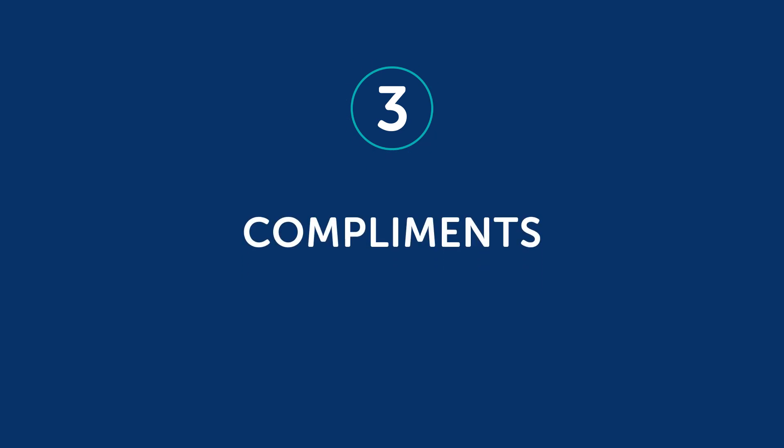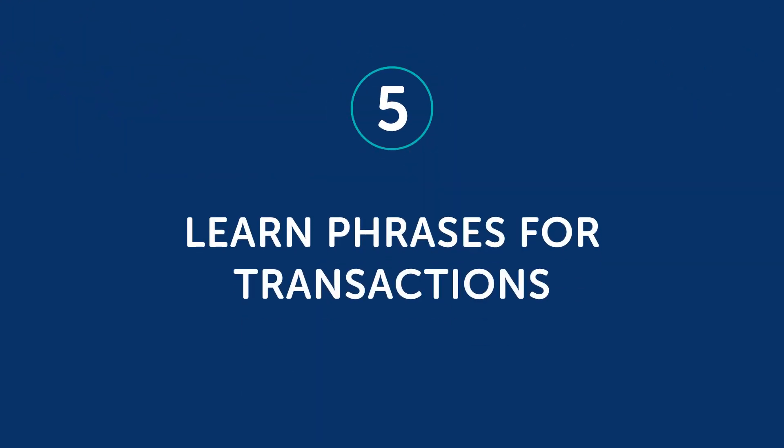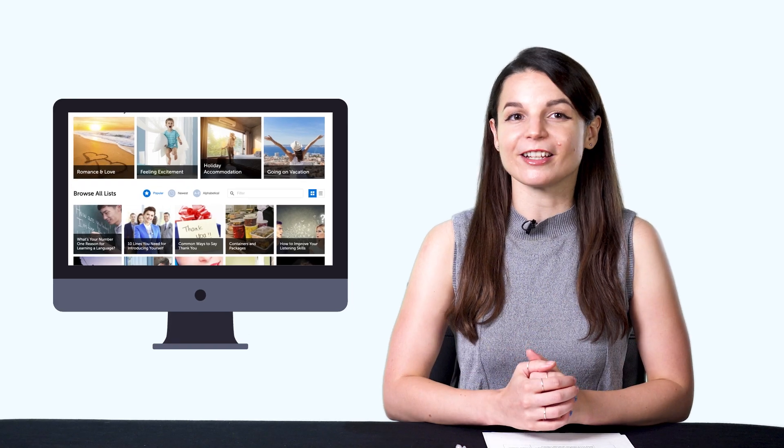Three: compliments. Compliments are a great way to start a conversation — you can compliment something about their city, their country, or something about their culture. Four: ask for help. For example, you can ask for directions or about the price of something and let the conversation go from there. These are very basic phrases that you learn in our survival phrases lessons. Five: learn phrases for transactions, like getting a room at a hotel or telling the taxi driver where to go. These are very easy ways to start a dialogue and you can easily move into other topics. Again, you learn all of these with our survival phrases lessons.